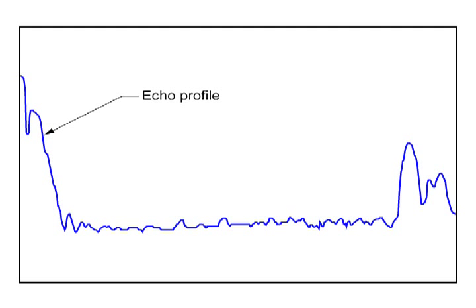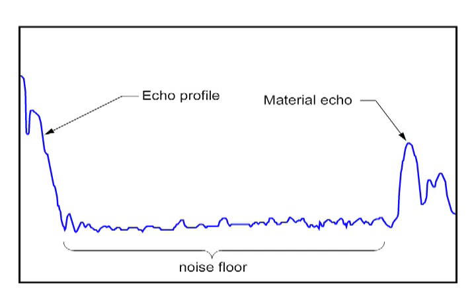At the front end, we have a relatively flat area. We call this the noise floor. This is background noise. The large bump on the echo profile is our true material echo. The smaller bumps following the true echo are indirect or false echoes.